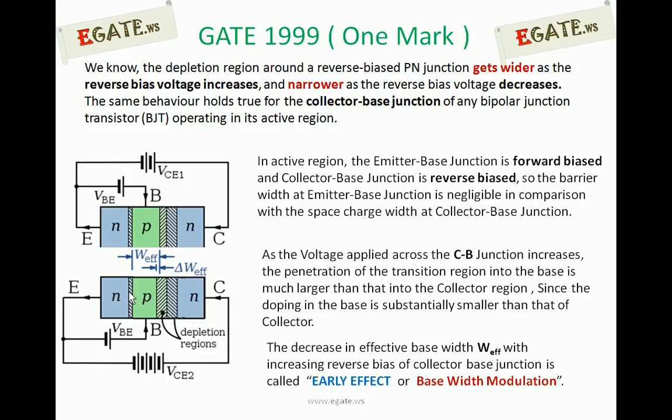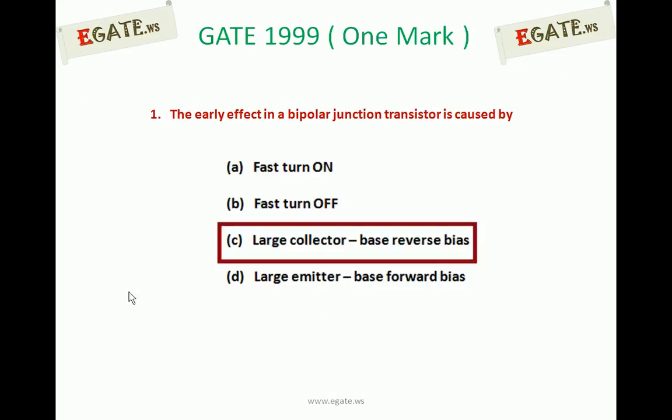So the correct option is: the early effect in a bipolar junction transistor is caused by large collector base reverse voltage. Thank you.